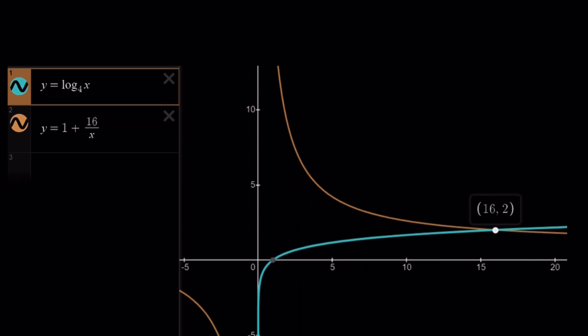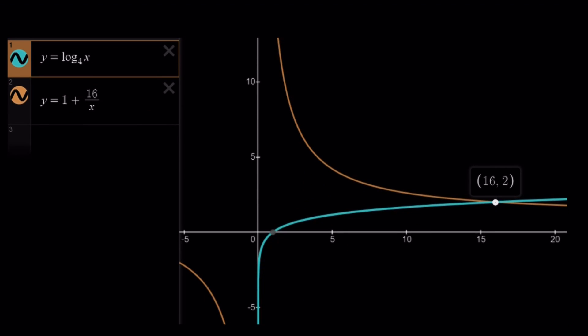Let's take a look at the graph. And here's the graph of both of these functions, log x and 1 plus 16 over x. As I said earlier, our log function is going to be increasing. And the other one, the hyperbola, is going to be decreasing. As you can see, it is only defined where x does not equal 0. And log x is only defined for positive x values. But they intersect at 16, 2, which means x equals 16 is the only solution to this equation.